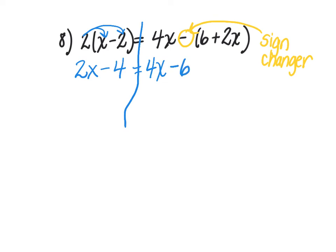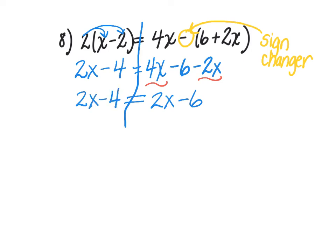So I bring down the 4x because it's in front of the sign changer. The 6 is positive, but the sign changer makes it negative 6. The 2x is positive, but the sign changer makes it negative 2x. Now I notice like terms on the right side: 4x and negative 2x gives me 2x, minus 6. On the left side, I bring down 2x minus 4. Now I'll get my x's together by subtracting 2x from both sides.